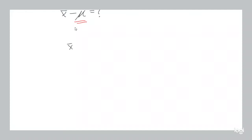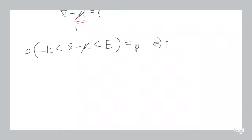Let's say there's some margin of error such that the difference between our population mean and our sample mean is within that margin of error. And we want to know the probability of the difference between our population mean and our sample mean being within those bounds — the probability is equal to some lowercase p. For example, we want to say: the probability that the difference between our sample mean and our population mean is within 10 is equal to 0.95.